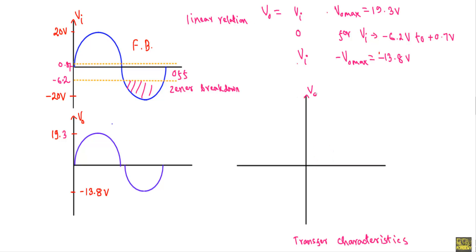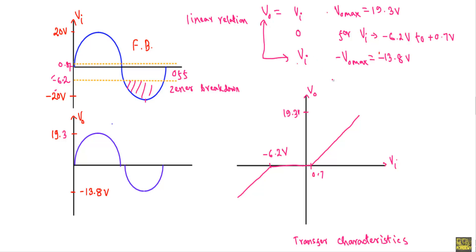The transfer characteristics show the relation between output and input voltage, with output on the y-axis and input on the x-axis. Marking plus 0.7 volt and minus 6.2 volt on the x-axis: when Vi is greater than 0.7 volt, output changes linearly with a positive maximum of 19.3 volt; from minus 6.2 to 0.7 volt, output equals zero; and from minus 6.2 to minus 20 volt, output changes linearly with a negative maximum of minus 13.8 volt. This gives the complete transfer characteristics of the clipper circuit.